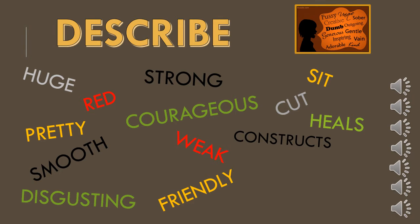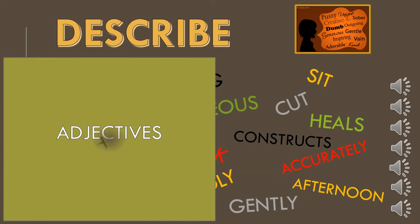You can also describe where, when, or how an action is being done. For example, he cuts accurately. The doctor heals gently. They go to the shop in the afternoon. Although you can use all parts of speech to describe something, you will mainly use adjectives and adverbs.